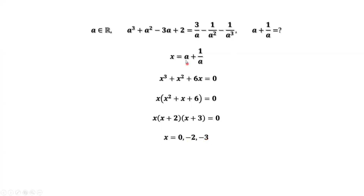What is x? By definition, x equals a plus 1 over a — which is exactly what the question asks us to find. We have three candidate values. But are we done? No, because according to the condition, a must be a real number. We need to check whether a plus 1 over a equals 0, negative 2, or negative 3 can give a real value of a.